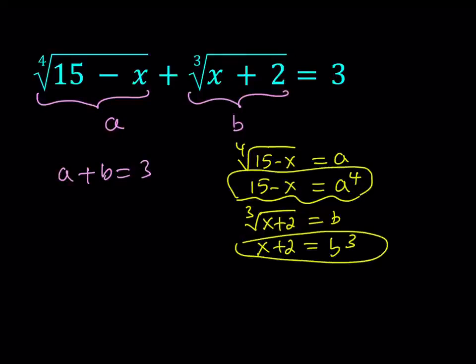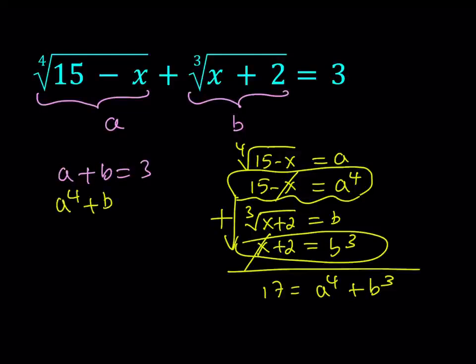Now I would like to use this one and this one together and what I can do is I can actually add those two equations. If we add them we get the following. The x cancels out. We get 17 equals a to the fourth power plus b to the third power. So let me go ahead and write it down here. a to the fourth plus b to the third equals 17. Now this gives us a nice system of equations in two variables and we should be able to solve it.